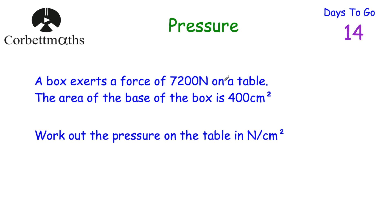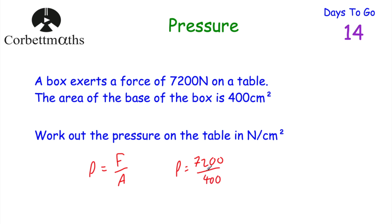Using the formula, pressure equals force divided by area: 7,200 divided by 400 equals 18. So the pressure is 18 newtons per centimetre squared.